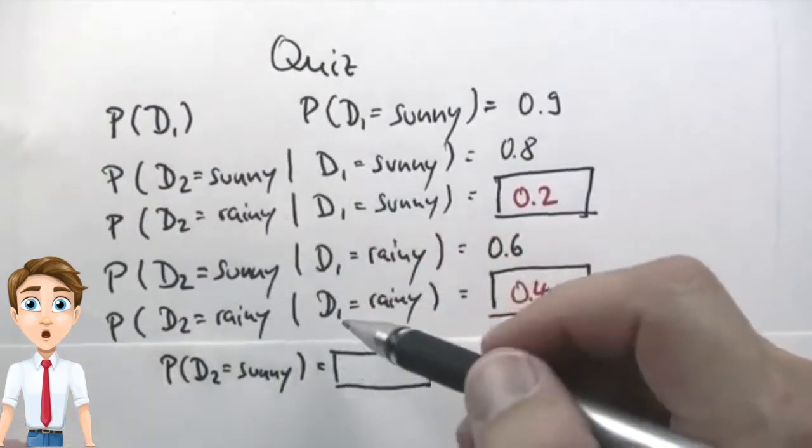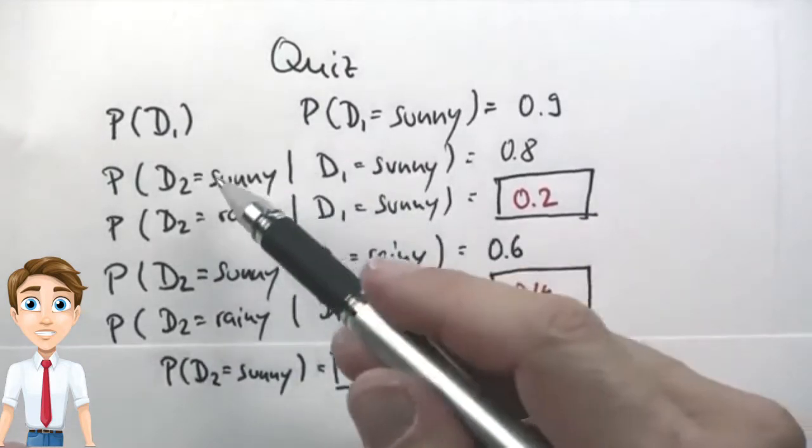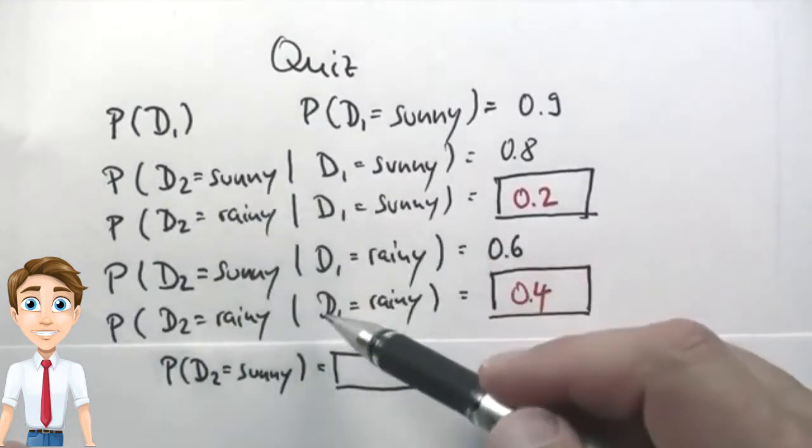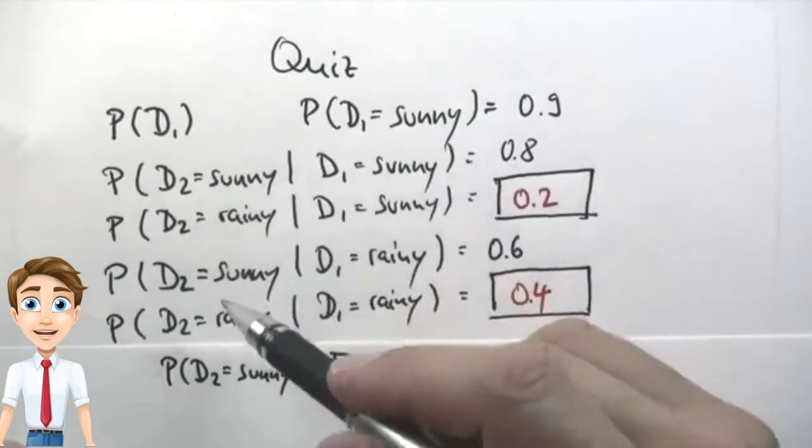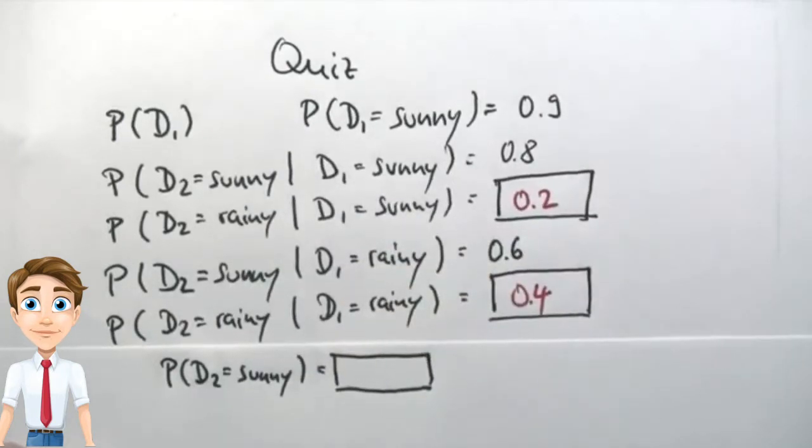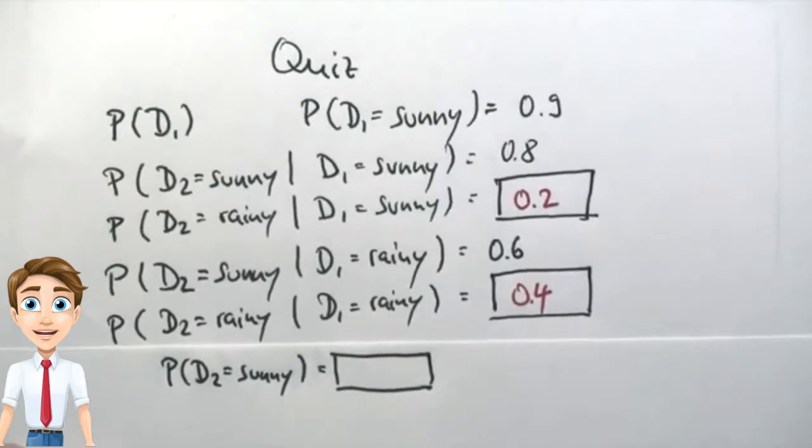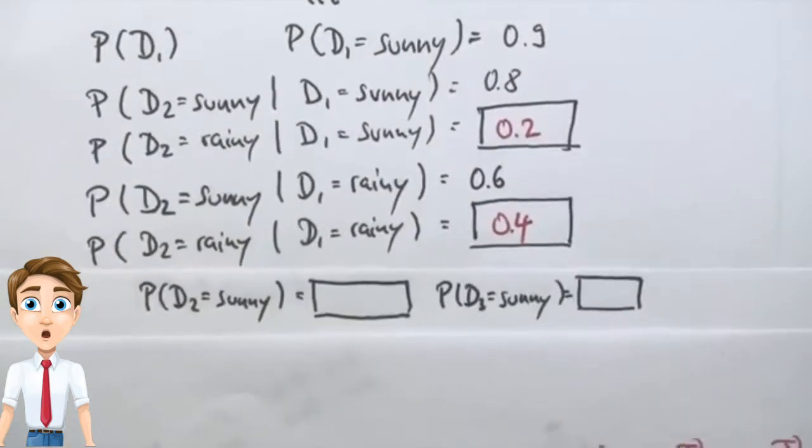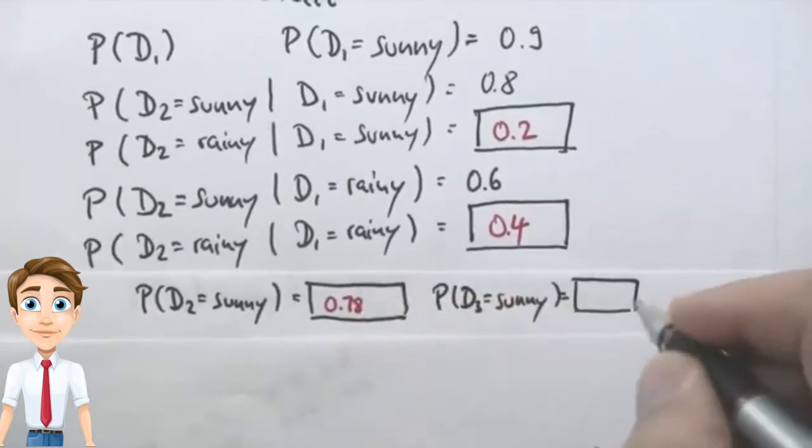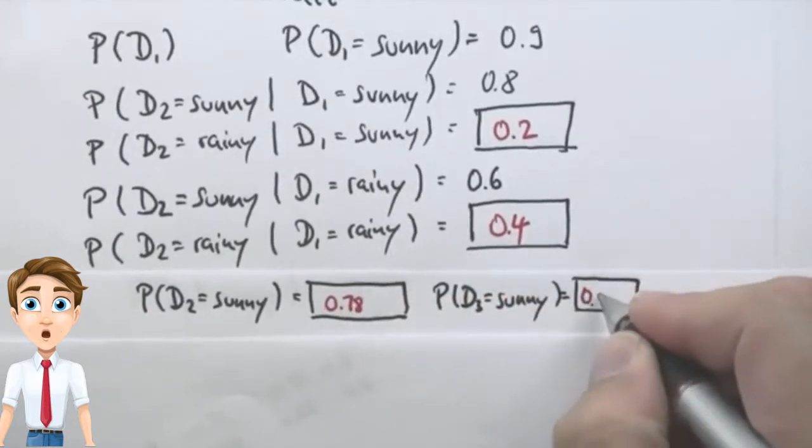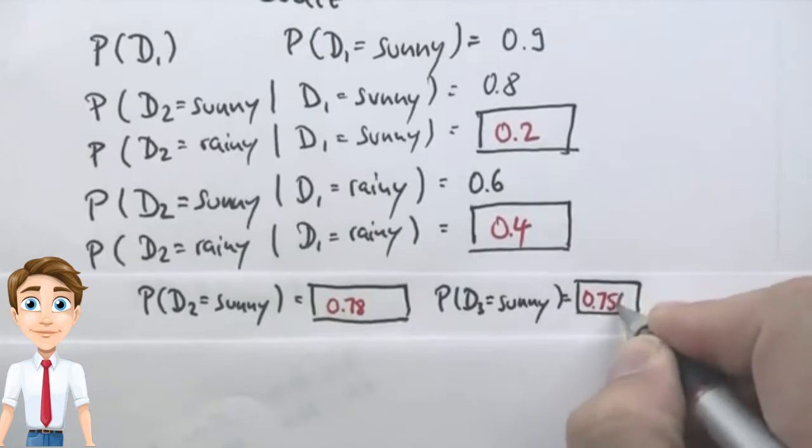A sunny day follows a rainy day with 0.6 chance. And a rainy day follows a rainy day, 0.4. So what are the chances that D2 is sunny? Suppose the same dynamics apply from D2 to D3. What's the probability that D3 is sunny? The correct answer is 0.78 for D2, and 0.756 for D3.